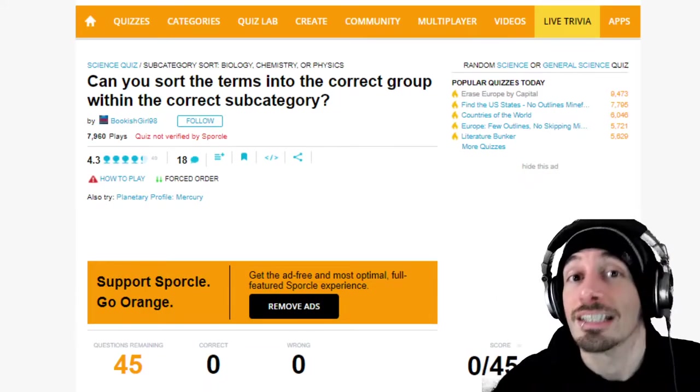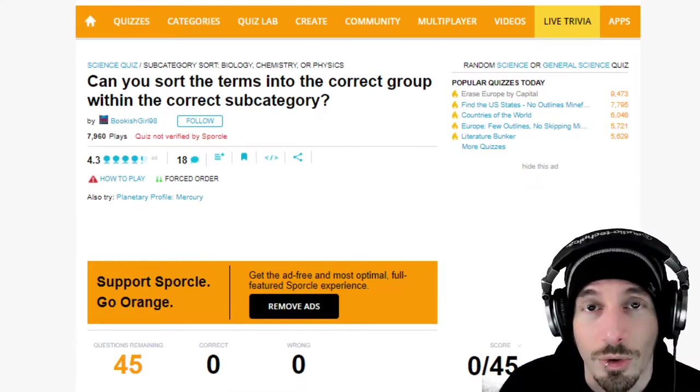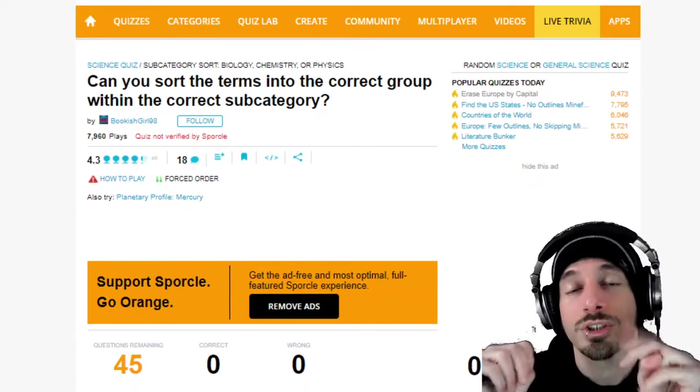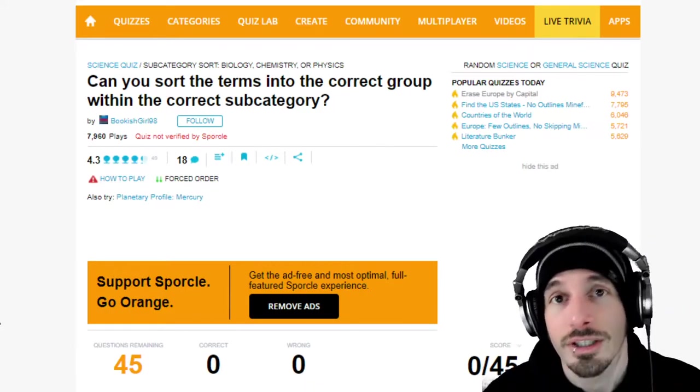45 to be exact, 45 different things and you have to sort them into different subcategories. I didn't know it was called a subcategory sort the last one we did, but this one is. That's what they're called.